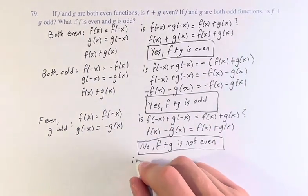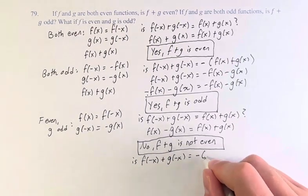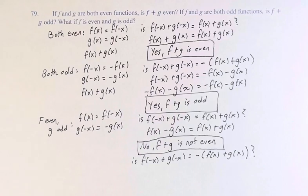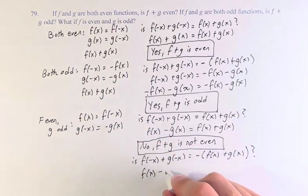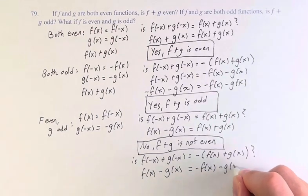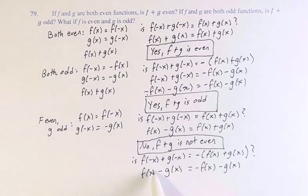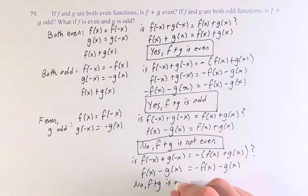Is it odd? Is f of negative x plus g of negative x equal to negative parentheses f of x plus g of x? More substitution and distribution — we'll do it in one step. f of negative x equals f of x, plus g of negative x equals minus g of x. Does this equal negative f of x minus g of x? No — we have minus g of x on both sides, so those are equal, but we have positive f of x and negative f of x, so they're not equal. So no, f plus g is not odd.